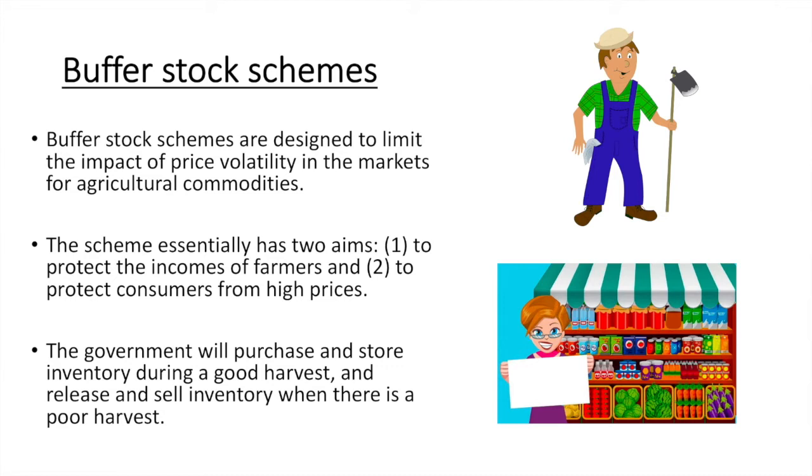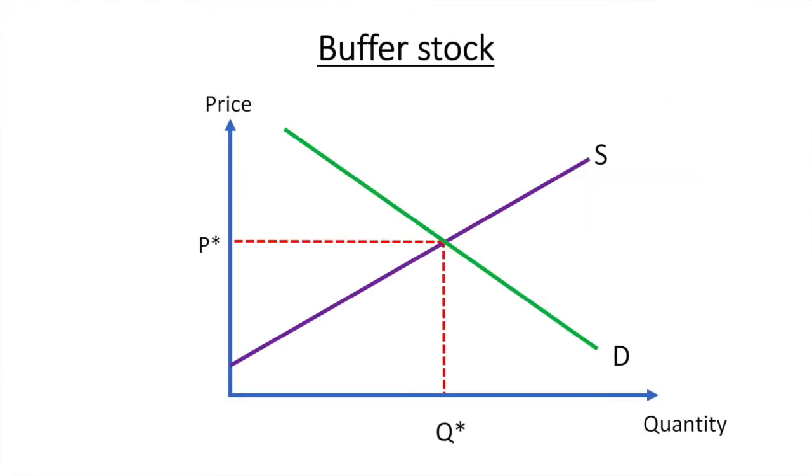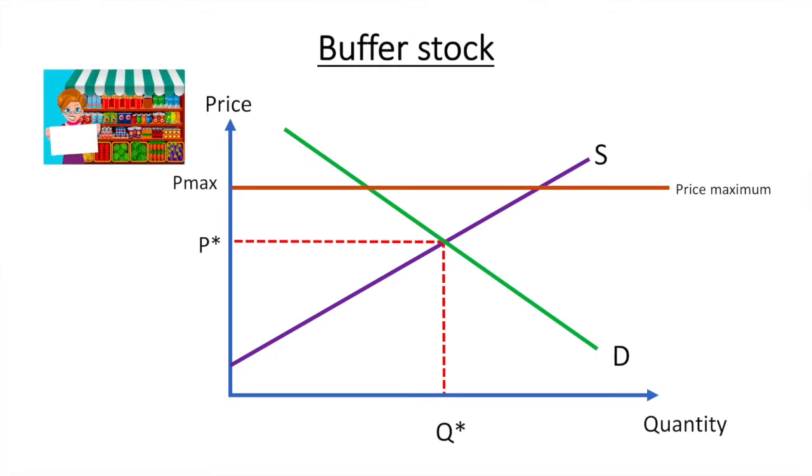To see how they work, let's see them in action on a diagram. Given a market for an agricultural good such as tomatoes, the government will set a maximum price at Pmax for what consumers should pay and a minimum at Pmin for what farmers should receive. The price of tomatoes, for instance, could fluctuate between these two prices and the government would not intervene.